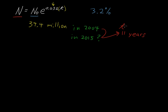So that will be our t. t equals 11 years. That's right here. We're going to plug in 11 for t and 39.4 for n₀.